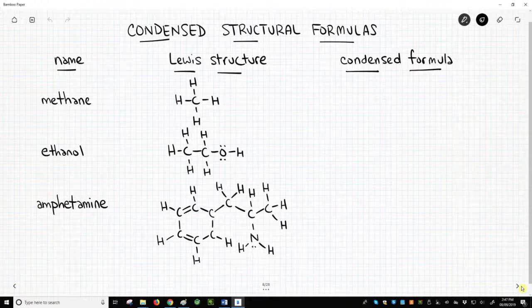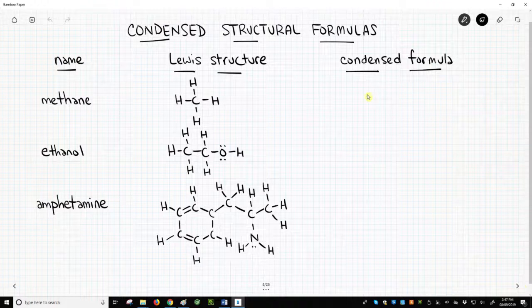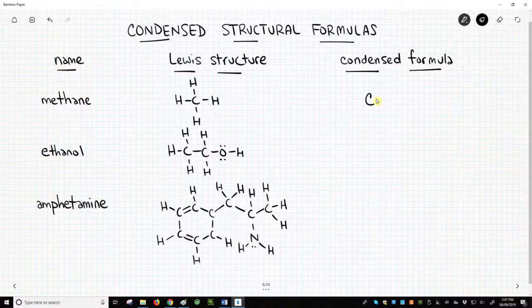In methane, there is just one non-hydrogen atom – carbon. Write the C for carbon and indicate the number of attached hydrogens – 4. That's it – CH4.